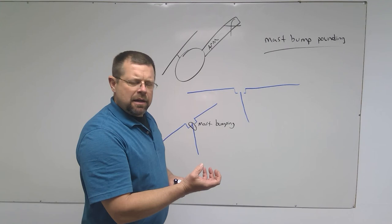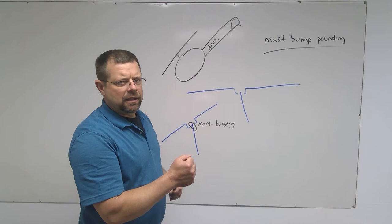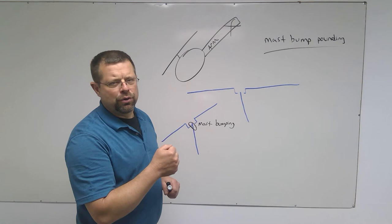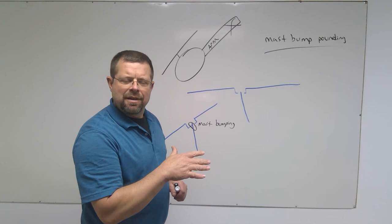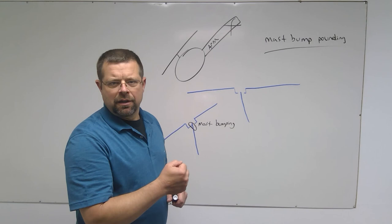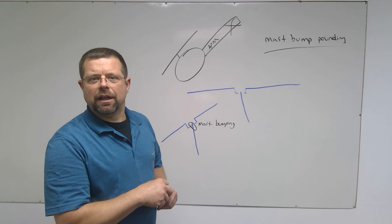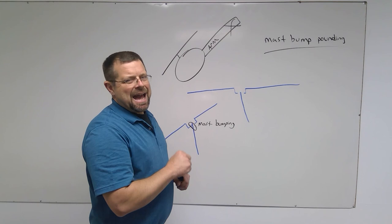The recovery to an unloaded rotor system: gentle aft cyclic until you feel that that rotor system is reloaded and your butt is in the seat. Then you can correct for the roll. Then you can go left cyclic if you're in a counterclockwise rotating ship, or right cyclic if you're in a clockwise rotating ship. The key is the first input has to be gentle aft cyclic.